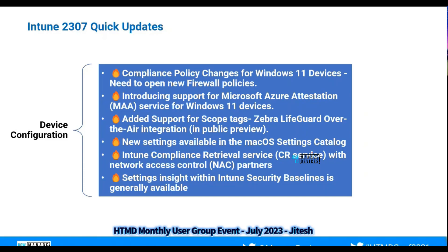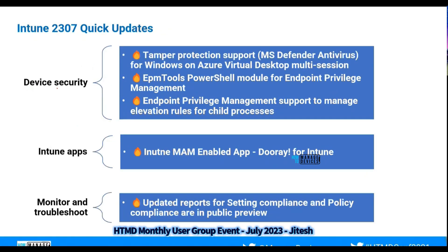In terms of device configuration, the highlighted changes in this July update include enhanced support for Azure Attestation Services, which is for Windows 11 devices, and added support for scope tags — specifically for the Zebra LifeGuard integration, currently in public preview. A couple of new settings and configuration profiles have been introduced for macOS devices. A feature from the previous June update — Settings Catalog — is now generally available. For device security, Tamper Protection support has been introduced for AVD multi-session, and more policies have been added for Endpoint Privilege Management, covering child processes and elevation control.